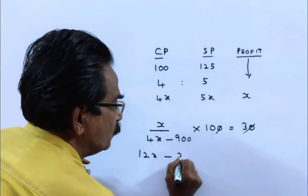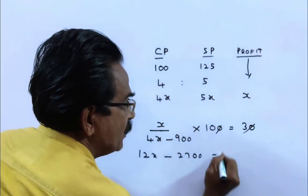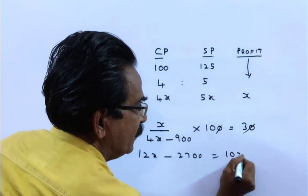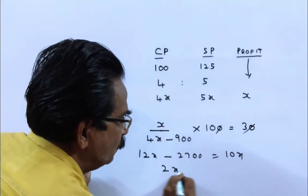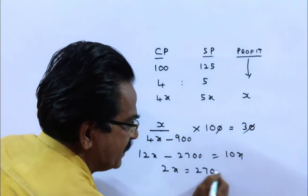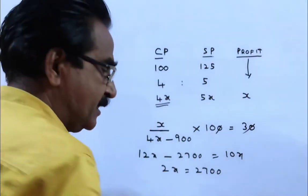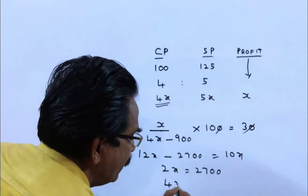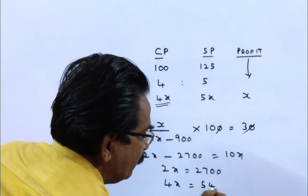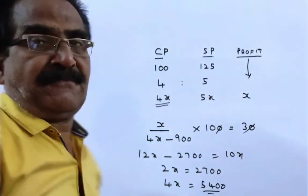12x minus 2700 is equal to 10x. 2x is equal to 2700 friends. We want 4x friends, the initial cost price. 4x is equal to 5400. 4x equals 5400 is your answer friend.